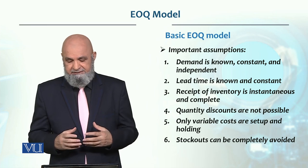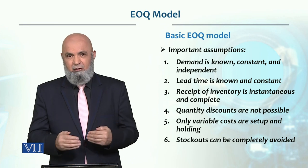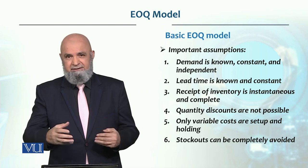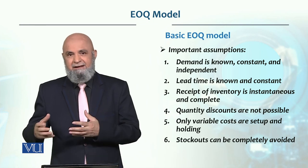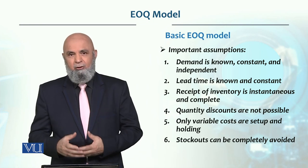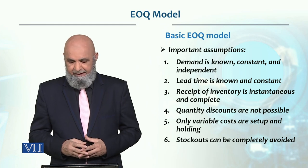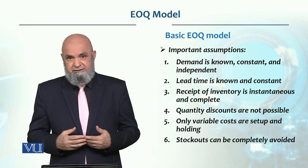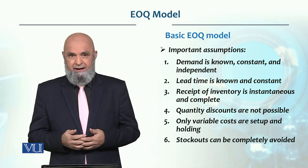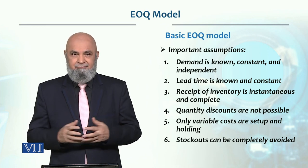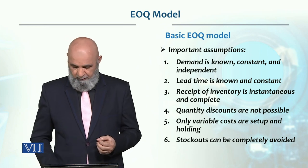The variable costs are setup cost and holding cost. Setup cost is the ordering cost — that is how much money you spend to place an order. Holding cost is the cost of holding inventory. Stockouts are not allowed in this model and can be completely avoided.